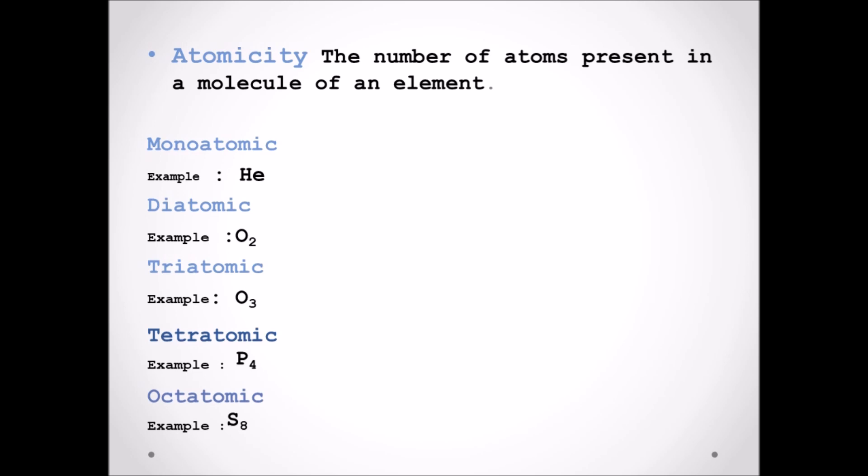Next we are going to study about atomicity. Atomicity means the number of atoms present in one molecule of an element. For example, oxygen which can be written as O2 contains two atoms, and also ozone, O3, which contains three atoms. The numbers which are present next to the symbol represent the number of atoms present. Monoatomic will have one atom, example He. Diatomic will contain two atoms like O2 oxygen. Triatomic will contain three atoms like O3 ozone. There are few elements that contain four atoms called tetra-atomic, like phosphorus P4, and octa-atomic which contains eight, like S8.